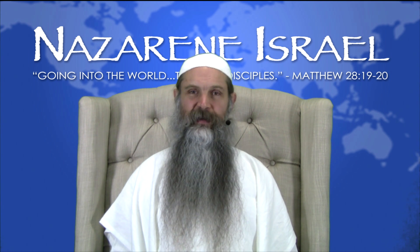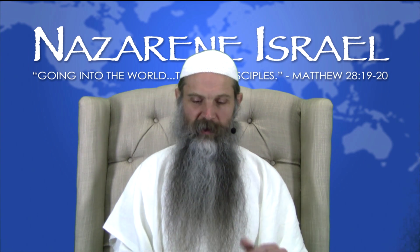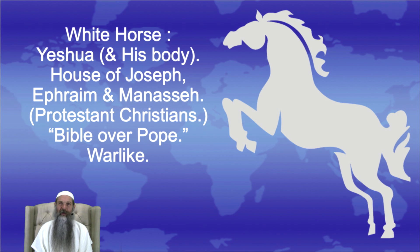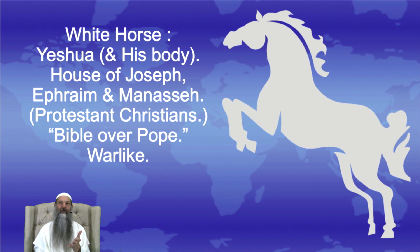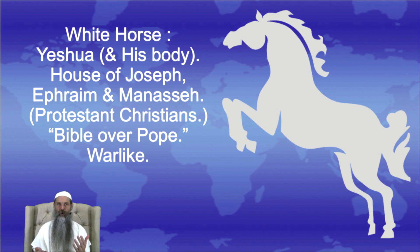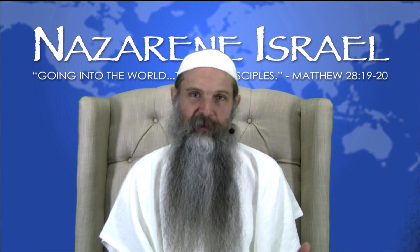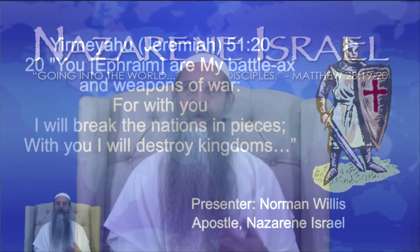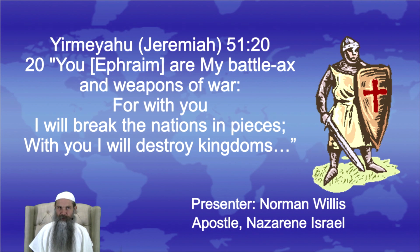When Yeshua returns in Revelation 19:11, he's riding a white horse. However, in this context we're speaking not about Yeshua, but about Yeshua's body — specifically the house of Joseph and his two sons Ephraim and Manasseh. Since Ephraim will not know his true identity until after Armageddon, at this point in time we're talking about Protestant Christians — those who value the words of Yeshua and his Father over the words of the Pope. The white horse is effectively warlike; in Jeremiah 51:20, Yahweh says, 'You Ephraim are my battle axe and weapons of war, for with you I will break the nations in pieces, with you I will destroy kingdoms.'